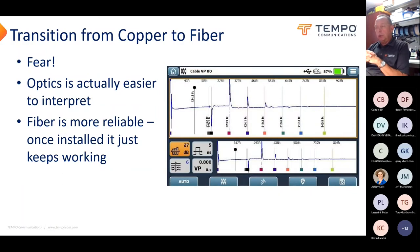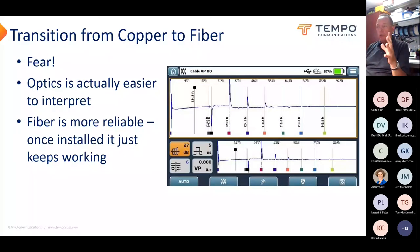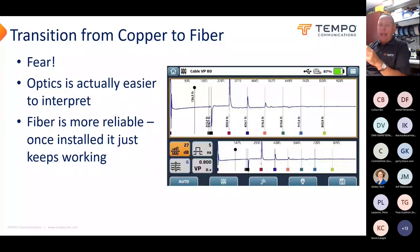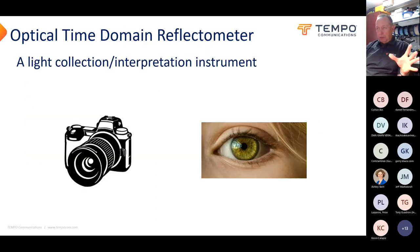This picture is output from our new TDR — the TV 220E — a time domain reflectometer, a copper tester for coax. You can see reflections, positive-going events, negative-going events, little wiggles and funny slopes. Copper interpretation is much more difficult. Optics is easier because it's only a positive-going event — a lot easier to interpret with less fear involved. Once fiber is installed, it just keeps working — it's much more reliable. You don't have the water issues and all that with an optical time domain reflectometer. It's really just a light collection and interpretation instrument.